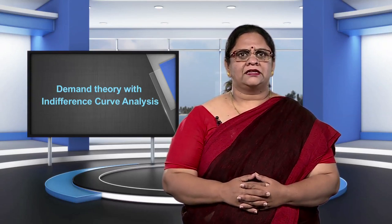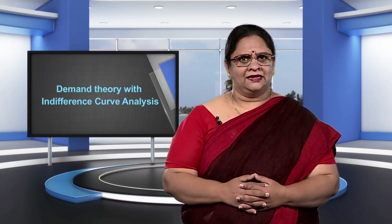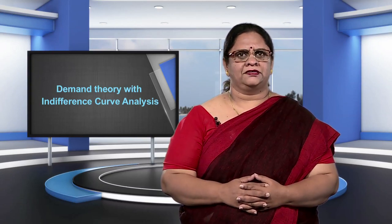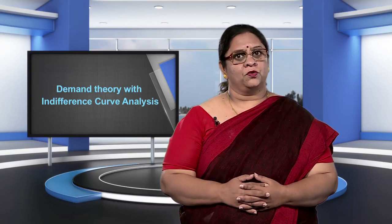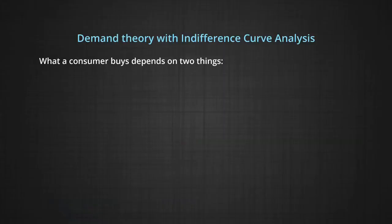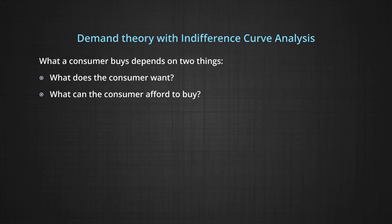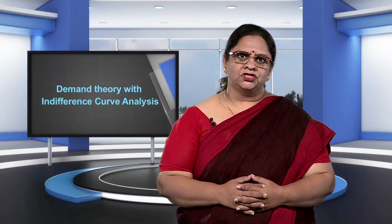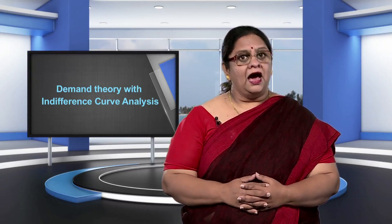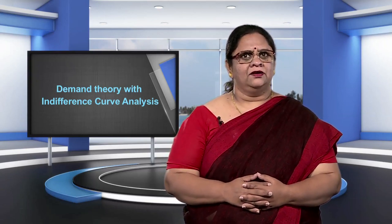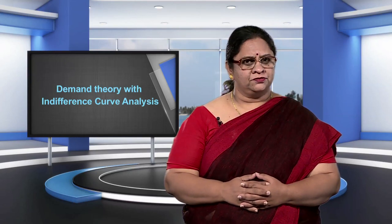Recall that consumer theory analyzes decisions made by consumers regarding what goods to buy and in what quantities to buy them. What a consumer buys depends on two things: one, what does the consumer want, and two, what can the consumer afford to buy? In this module, we examine the first question again: how does the consumer decide what to buy and how much of it to buy?